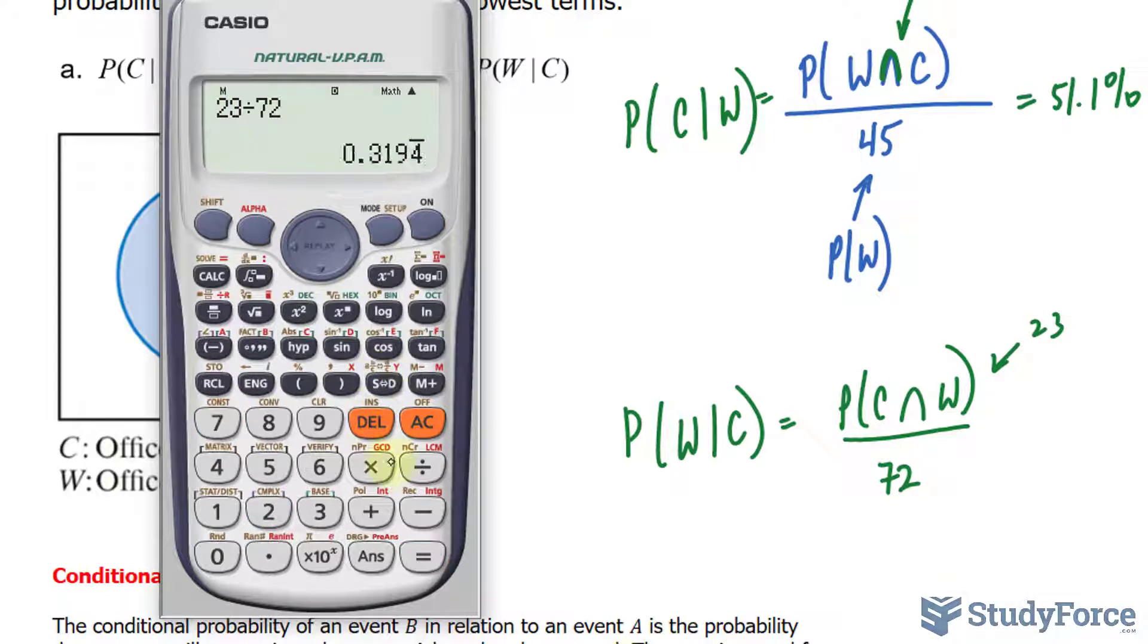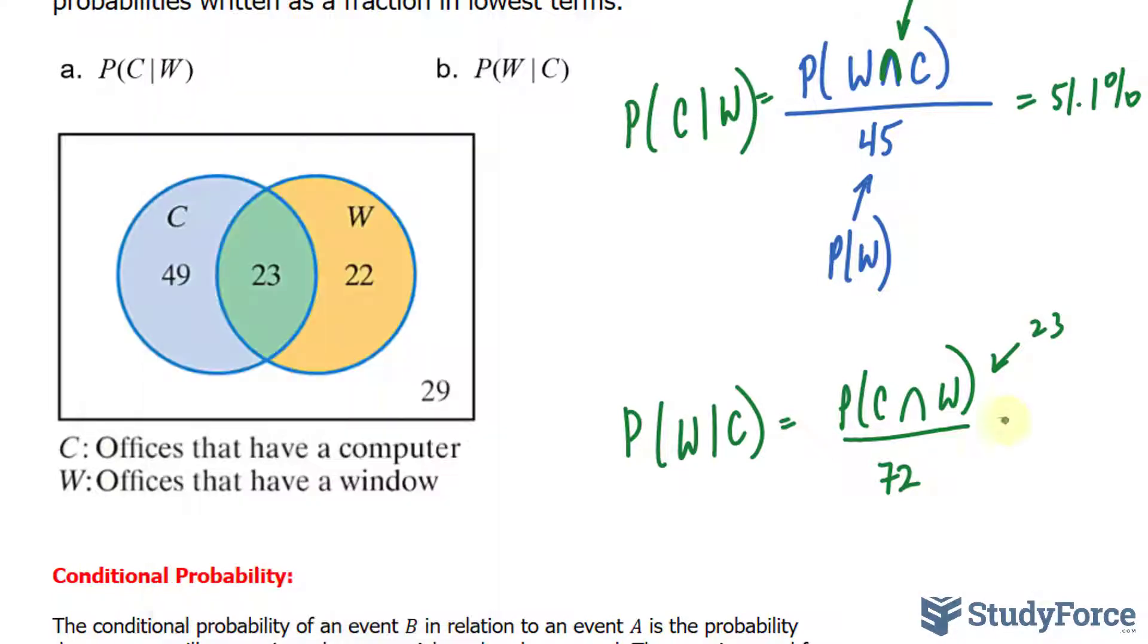and multiply that by 100% to get 31.9%. That's the probability of selecting a room with windows given that you selected one with a computer.